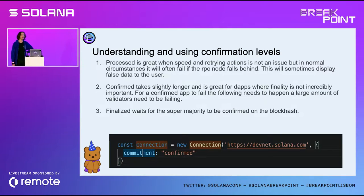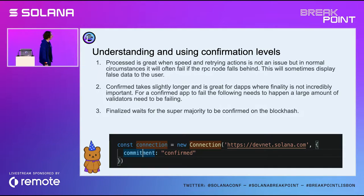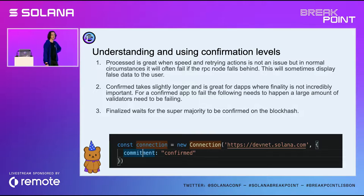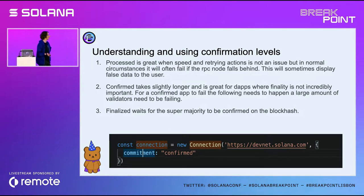I've also seen people use Processed everywhere — or Recent, which was before Processed. The problem with using Processed on your dApp is that you'll get way more errors than normal. It's great for doing things like 20,000 or 30,000 transactions where you don't care about data correctness, but it kind of sucks on a dApp. After months, I figured out you're supposed to use Confirmed — it's in the middle of the two. It's slightly slower than Processed and works well enough, but still has some risk since it's not finalized. If a lot of validators are slashed it will break, but that's kind of an edge case.